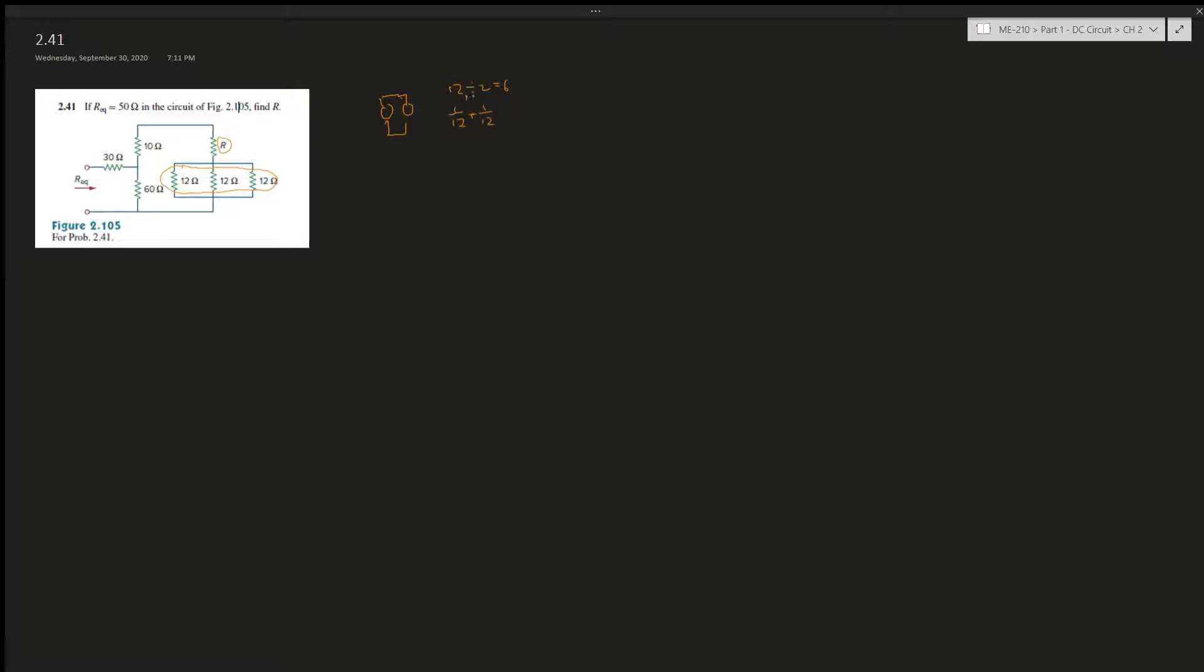You can prove it like 1 over 12 plus 1 over 12 and 1 over that thing. It's gonna be 2 over 12, and then you flip it over, find the reciprocal 12 over 2, that's just 6. Okay, so there's three 12s so it's gonna be 12 divided by 3.